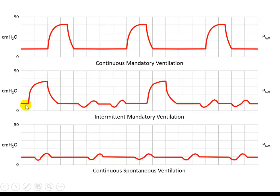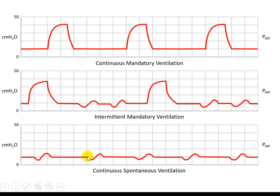In intermittent mandatory ventilation, the patient has some spontaneous breaths in between mandatory breaths. Those spontaneous breaths can also be supported with pressure support, giving pressure supported breaths in between. The mandatory breaths can be synchronized with the patient's efforts and delivered at the same time the patient is breathing, forming assisted or synchronized breaths — and this is how SIMV mode is formed. If all breaths are spontaneous, this is continuous spontaneous ventilation, and supporting those breaths with pressure support transforms the mode into pressure support ventilation.